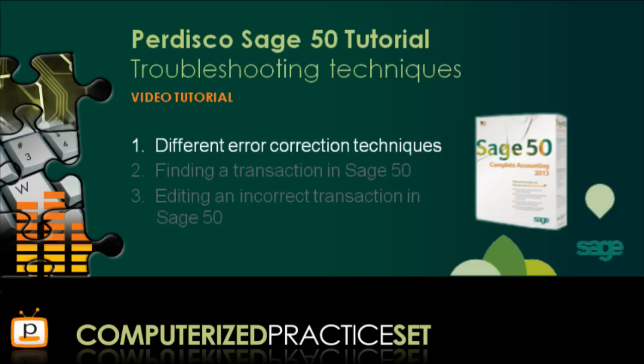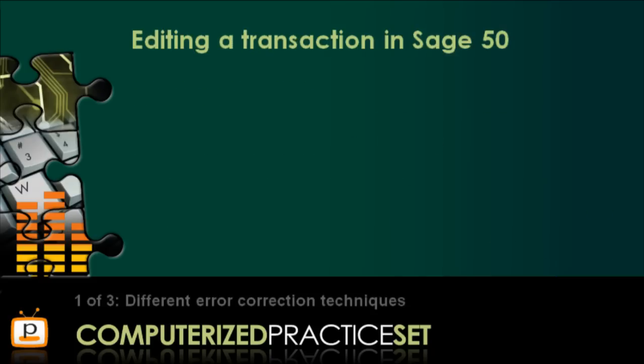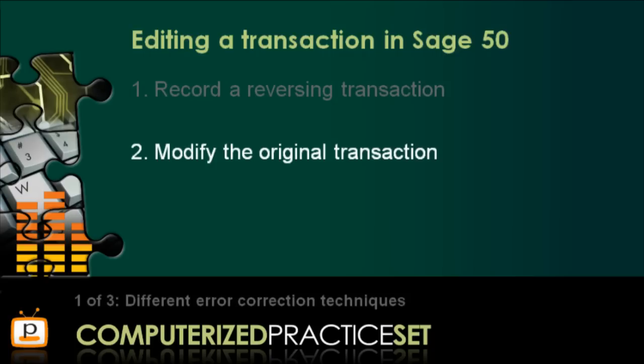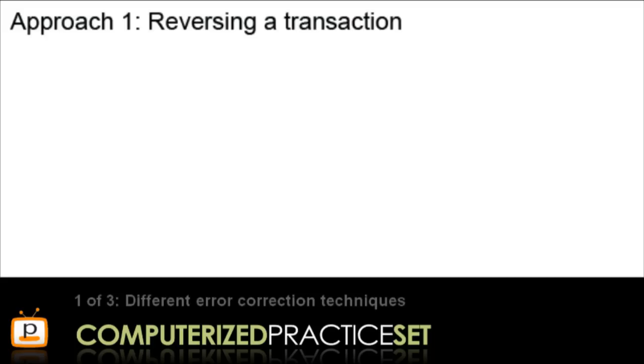Let's begin with the first of these: different error correction techniques. Sage 50 provides two ways to edit a transaction. The first is to record a reversing transaction, and the second is to modify the original transaction. We will consider both of these in turn and start with the first approach: reversing a transaction.